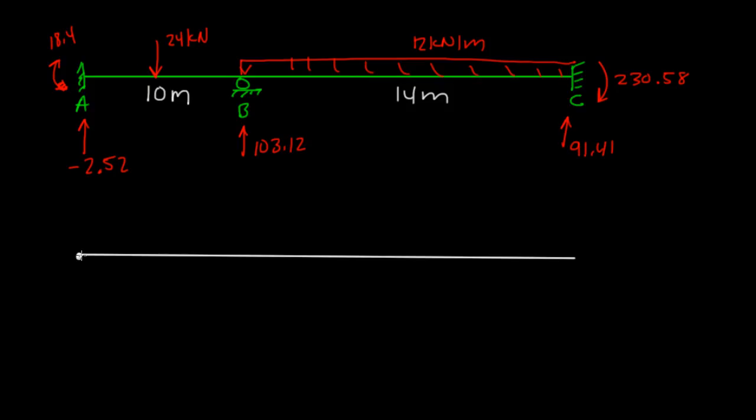So for our shear diagram in kilonewtons, we have this negative 2.52. And it stays the same until mid-span here. And it goes down 24. So it goes down here to 26.52, right? And it stays the same until it gets to B. Then you have this reaction of 103. It gets pushed up to 103.12. I'm sorry, negative 26.52 plus the 103.12 should give us 76.12.